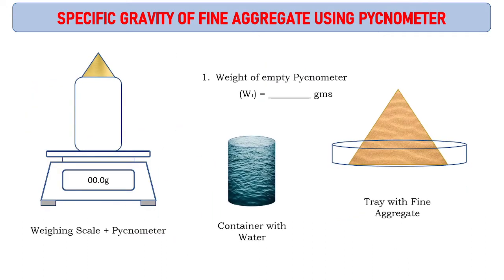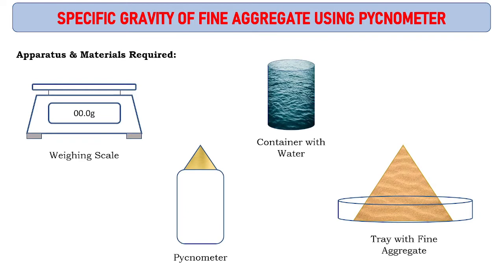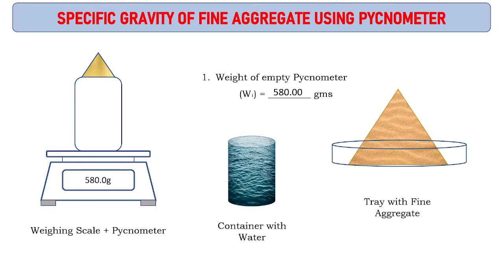Procedure: We are measuring the weight of empty pycnometer. When we keep the pycnometer on the weighing scale, the weighing scale should first be set to zero. When we place the pycnometer, the reading comes as 580 grams of empty pycnometer.